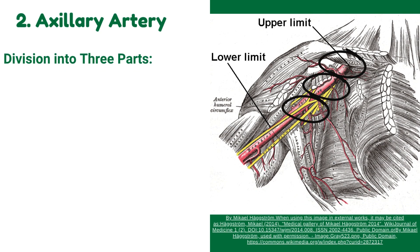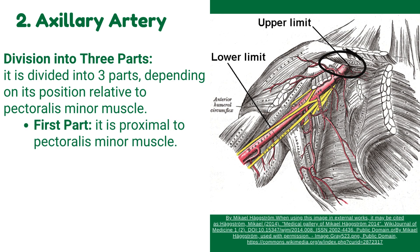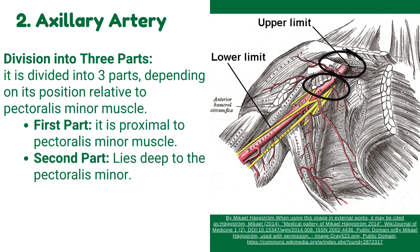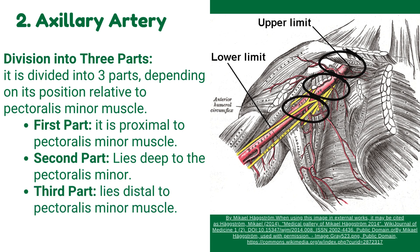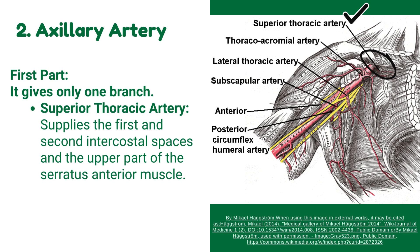The axillary artery is divided into three parts depending on its position relative to the pectoralis minor muscle. The first part is proximal to pectoralis minor; the second part lies deep to pectoralis minor; and the third part lies distal to pectoralis minor. The first part gives only one branch: the superior thoracic artery, which supplies the first and second intercostal spaces and the upper part of the serratus anterior muscle.